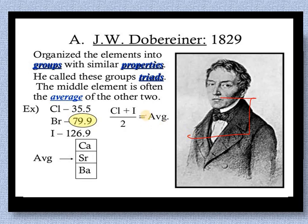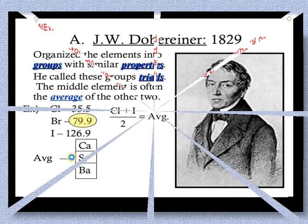The third triad is chlorine, bromine, and iodine. We can find bromine's mass by taking the average atomic mass of chlorine and iodine. That is the same way the element strontium was identified.